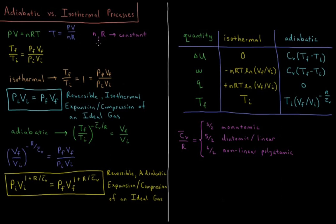In a closed system we can't exchange matter with the surroundings, so the number of particles and thus the number of moles is constant. The gas constant R is also a constant, so NR in the denominator is constant. Therefore, the final temperature over the initial temperature equals PF·VF over PI·VI, as you are probably familiar with from general chemistry.